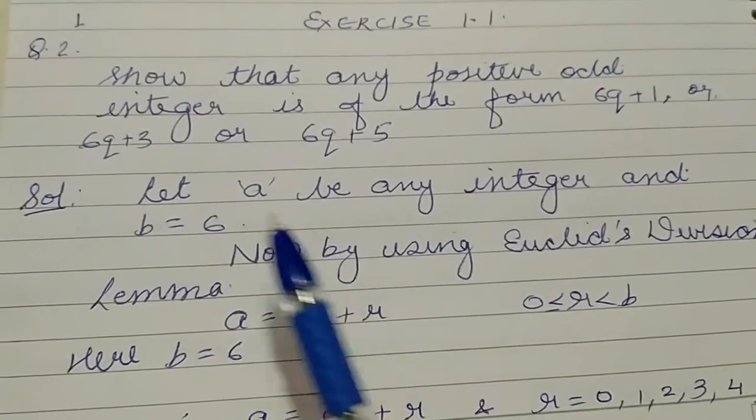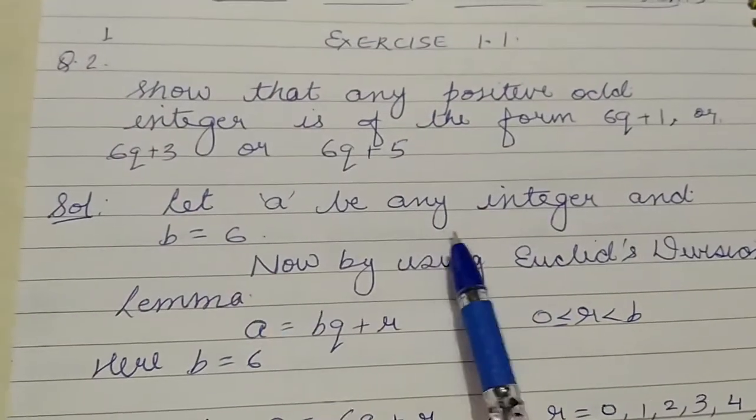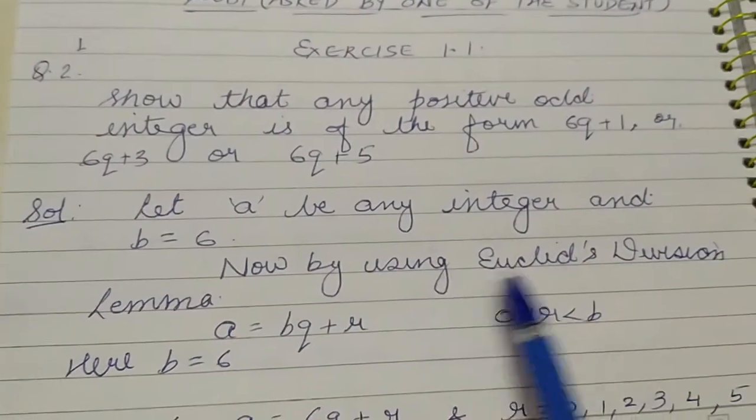For the solution of this question, we consider a be any integer and b equals to 6. Now by using Euclid's division lemma,